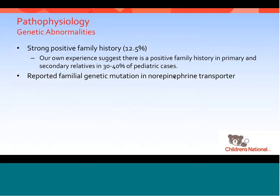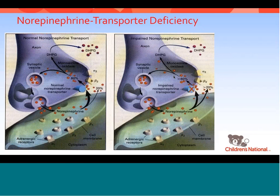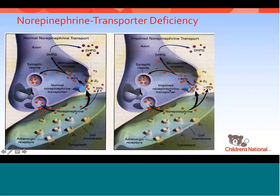Genetics plays a role, with a very strong positive family history in our experience — the family history is positive in first and second degree relatives in at least 40% of patients. There is one known genetic mutation in a norepinephrine transporter, described by the Vanderbilt group. Norepinephrine is important in trans-synaptic membrane coupling. After norepinephrine is released in the neuromuscular junction, there's reuptake by norepinephrine transporters. If there's impaired norepinephrine transporter function, the synaptic concentration of norepinephrine will be higher, which may contribute to their increased sympathetic state.